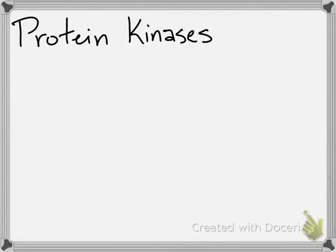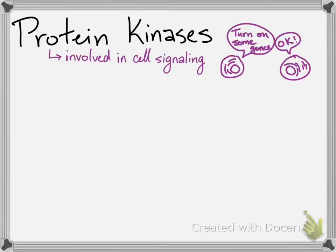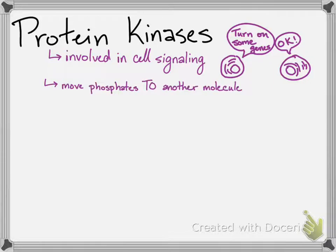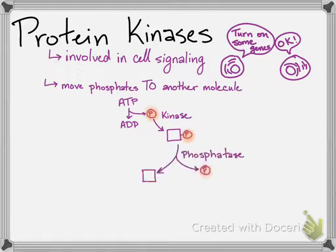In the cell signaling world, protein kinases hold a special place. Proteins that can transfer phosphates from ATP to another molecule are called kinases. Proteins that remove phosphates, or dephosphorylate, are called protein phosphatases.